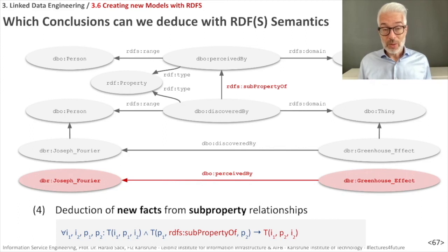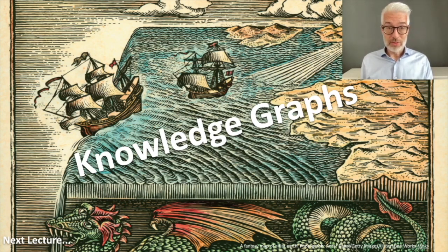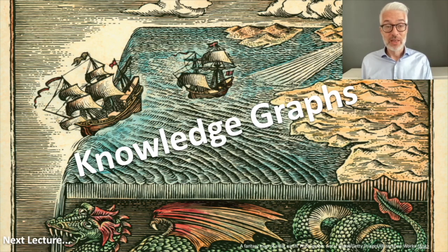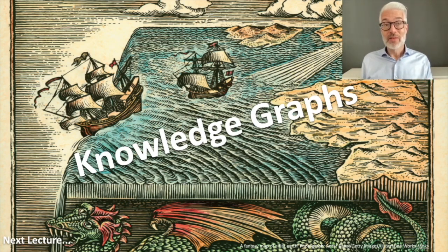This is what you can already do with only a few vocabulary words like rdf:type, rdfs:subClassOf, rdfs:subPropertyOf, and domain and range. It will become more complex with the Web Ontology Language OWL, which will be the subject of a later lecture. Before that, we want to introduce knowledge graphs properly — we have been talking about knowledge graphs for many sections but have never given a formal definition of what a knowledge graph is and why it matters. This is what we will do in the next part of the lecture. Thank you.